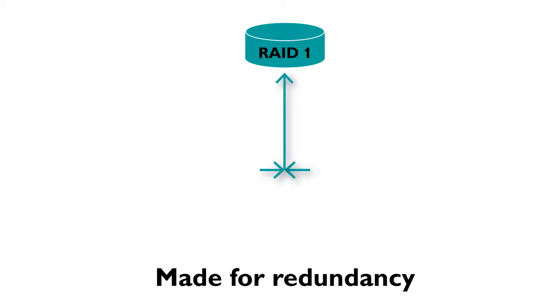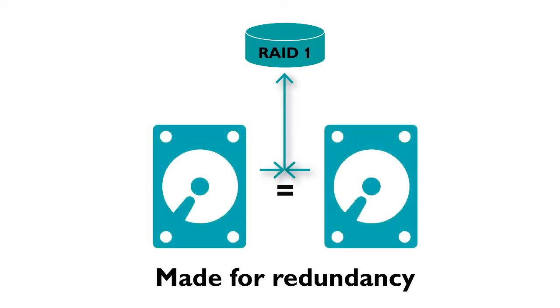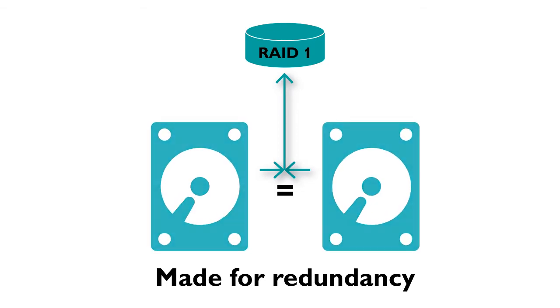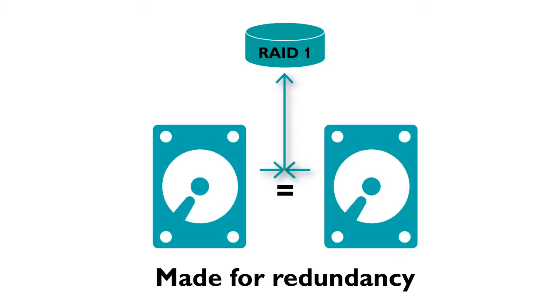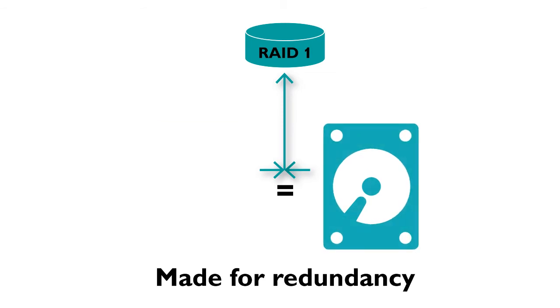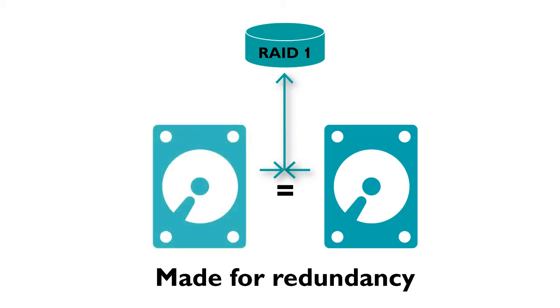Now let's look at RAID 1, also known as Mirroring. Mirroring means that your data is written to both drives, keeping an exact copy of your data automatically. If one drive is not functioning correctly, the other drive will keep the system up and running. Meaning that in RAID 1, half of your drive capacity is utilized for redundancy.